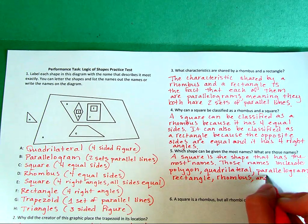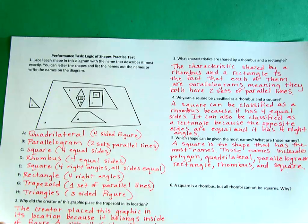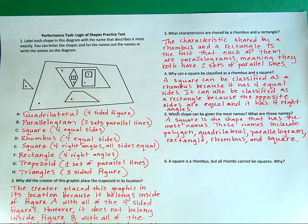The final question states: a square is a rhombus but all rhombi cannot be squares — why is this? First, a square is classified as a rhombus because the definition of a rhombus states it has four equal sides, and a square meets that qualification. However, a rhombus cannot always be a square, because the definition of a square states it must have four right angles, and not all rhombi will have four right angles.